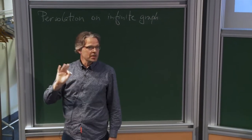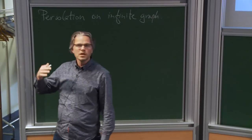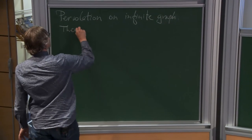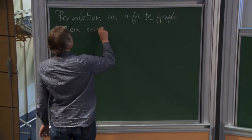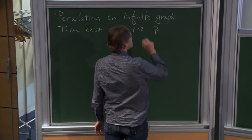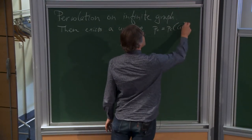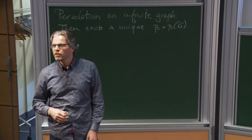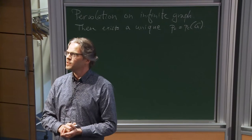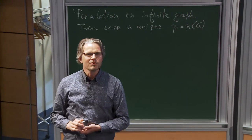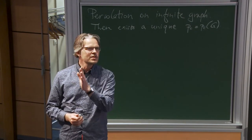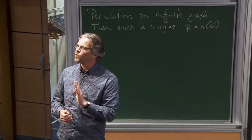Think about Z^d — Z^2, Z^3, Z^4, or whatever. There exists a unique p_c, which depends on the graph. Below it you have no infinite component, above it you have an infinite component, and close to it is where all the fun happens — similar to what Dima was saying about the Ising model, where everything interesting happens near the critical point.